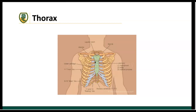Rib 1 articulates with vertebral body number 1, rib 2 with vertebral body number 2, and so forth. There are 12 thoracic vertebrae and 12 ribs — 7 are true (directly attach to sternum), 8 through 10 are false (indirectly attach via ribs 6 and 7 cartilage), and ribs 11 through 12 are floating because they have no attachment to the anterior sternum at all.